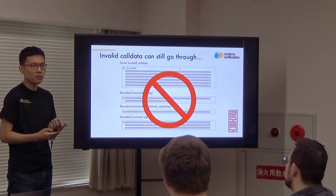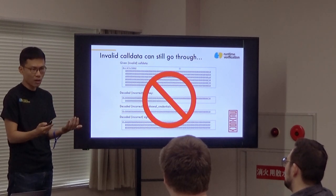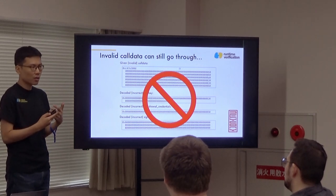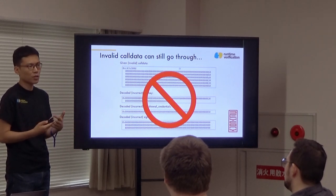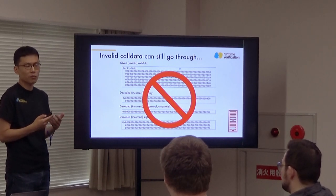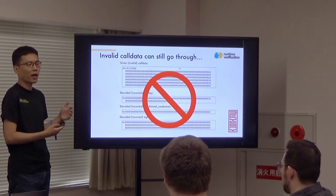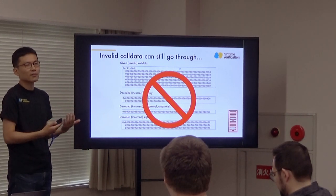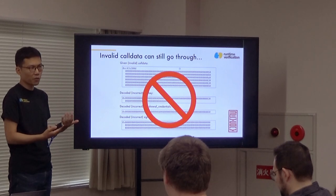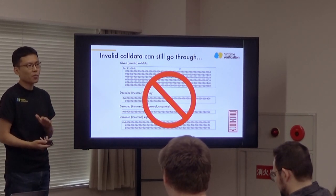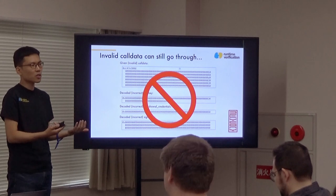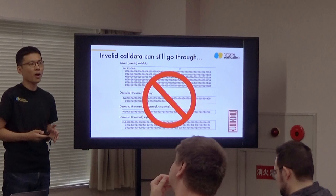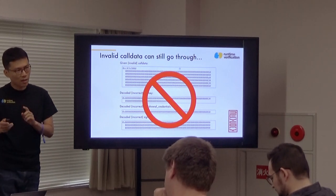This is why bytecode-level verification is really important — to achieve full assurance of your deployed smart contract. Currently our KEVM tool requires significant expert effort to use, so only large organizations like the Ethereum Foundation can afford it. Our goal is to make even small startups able to use our verifier to get full guarantees of their smart contracts, which is why we are working on the next stage of the pipeline — the Firefly tool.